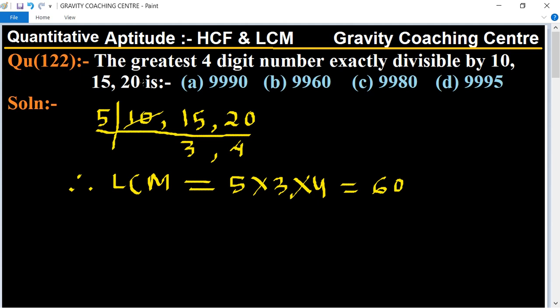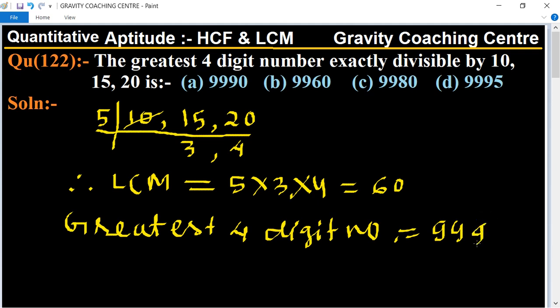And we know that the greatest four-digit number equal to 9999. So check if this one is divisible by 60.